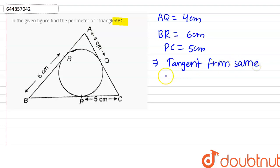on circle are equal. So because PC and PQ both are tangent from same external point that is C, so PC equals QC and that is 5 centimeter. And likewise, AQ equals AR that is 4 centimeter and BR equals BP that is 6 centimeter.